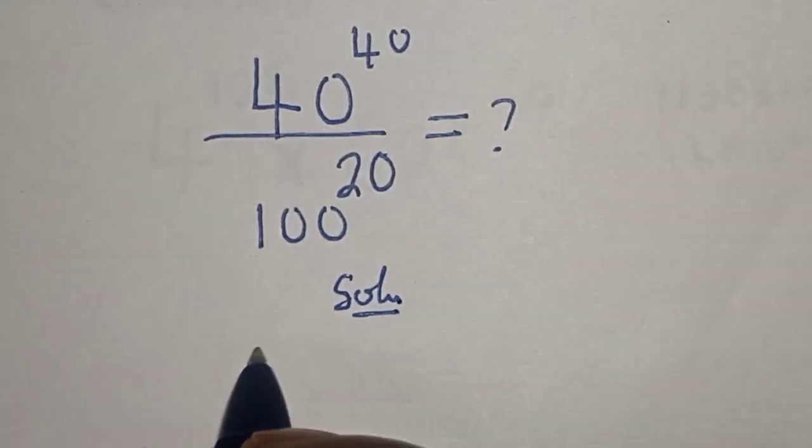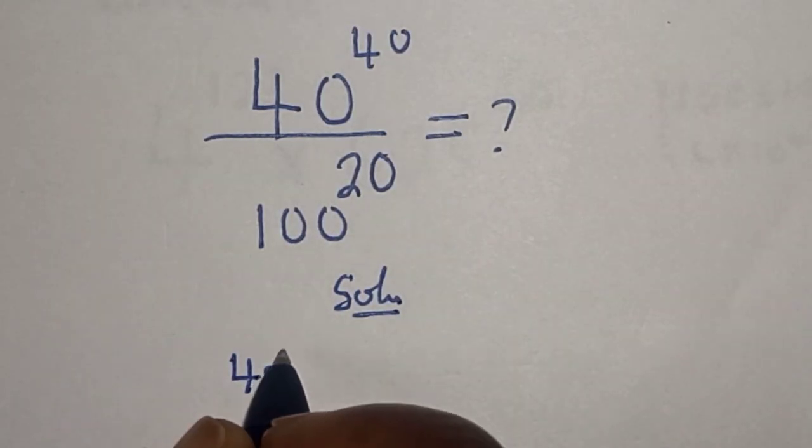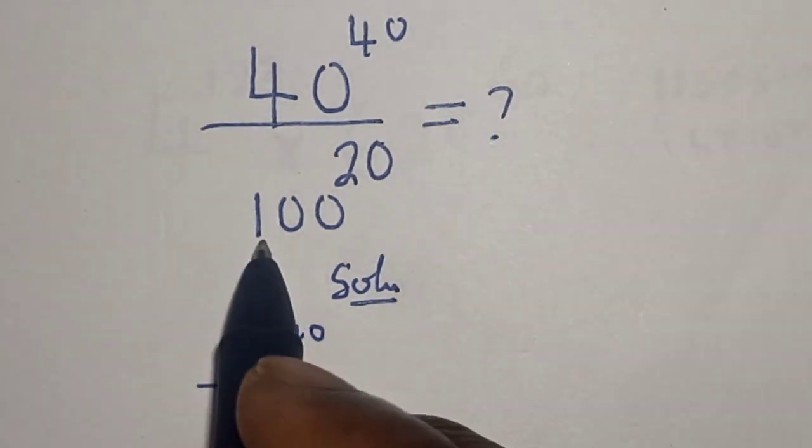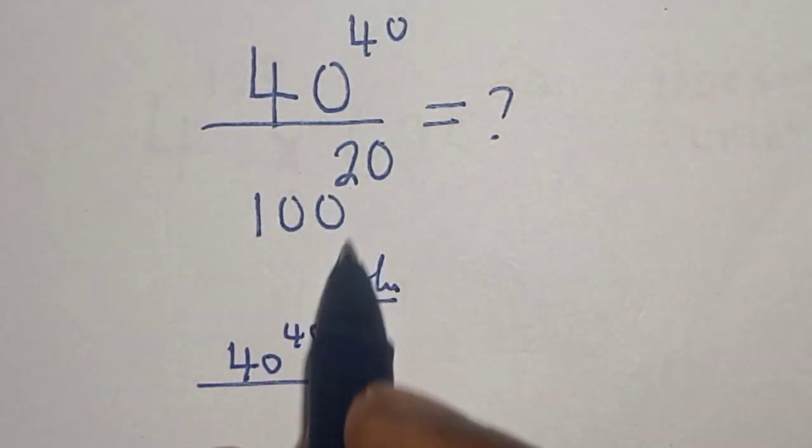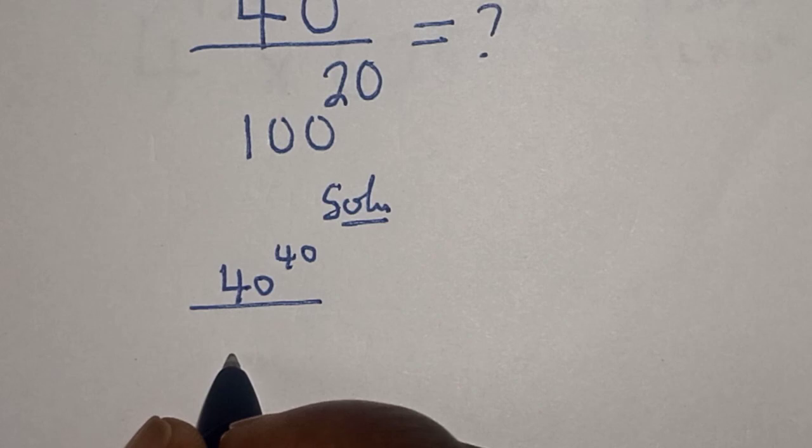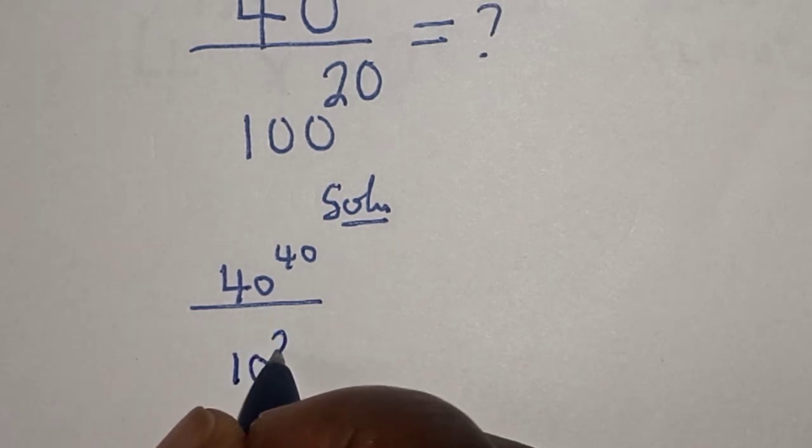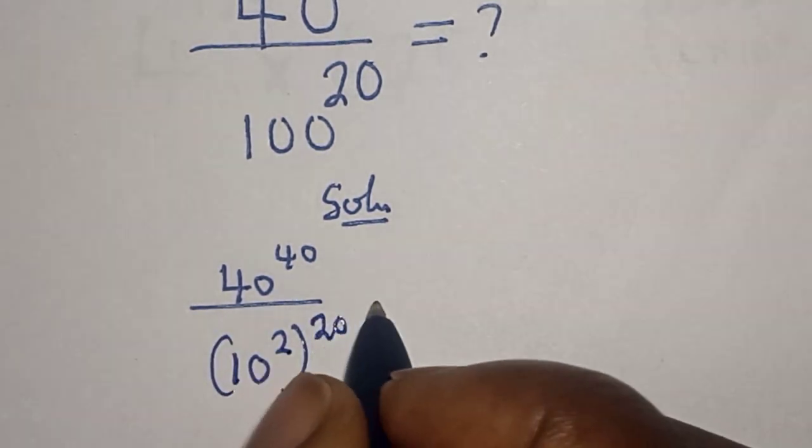This is 40 to the power of 40 divided by 100 raised to power 20, which can be written as 10 squared to the power of 20.